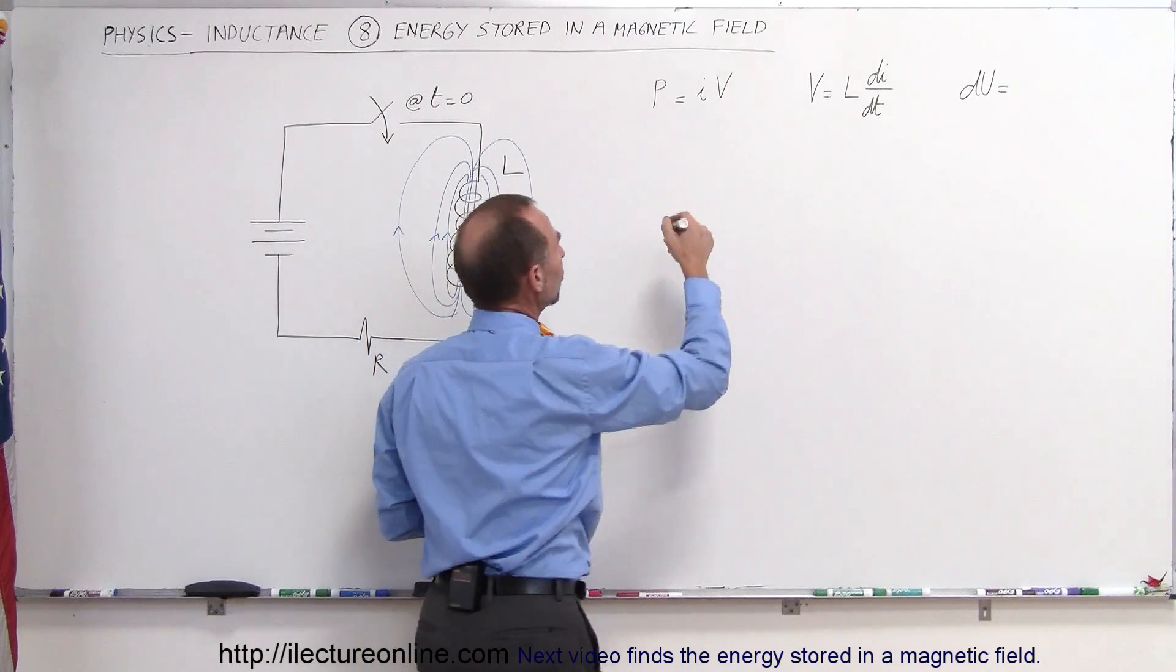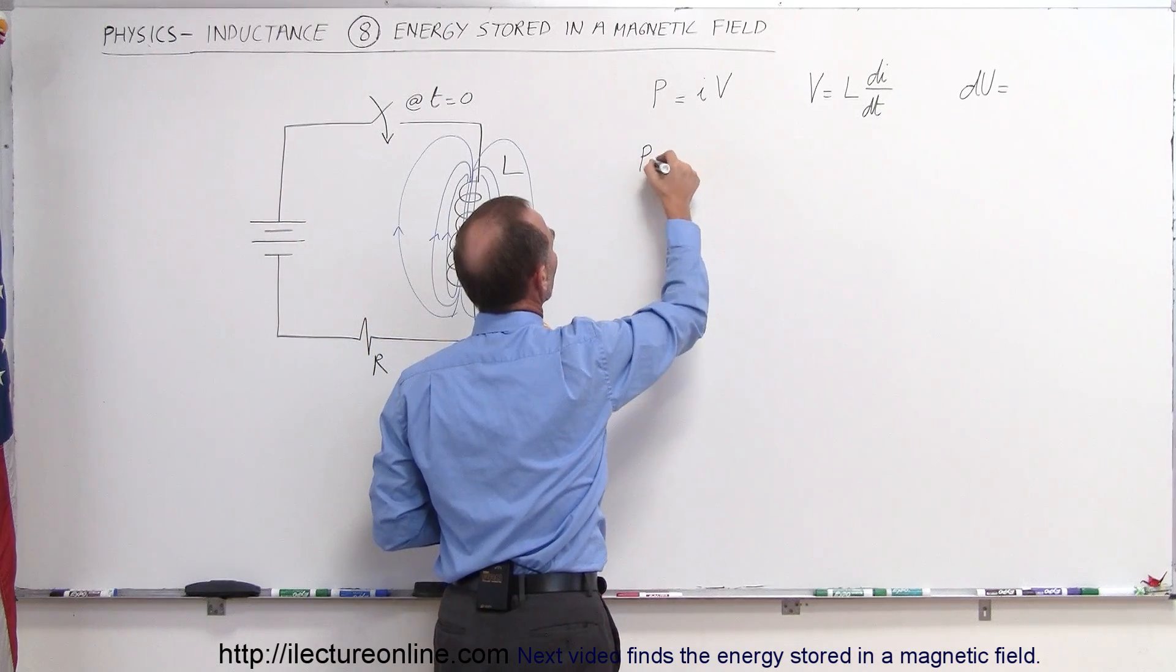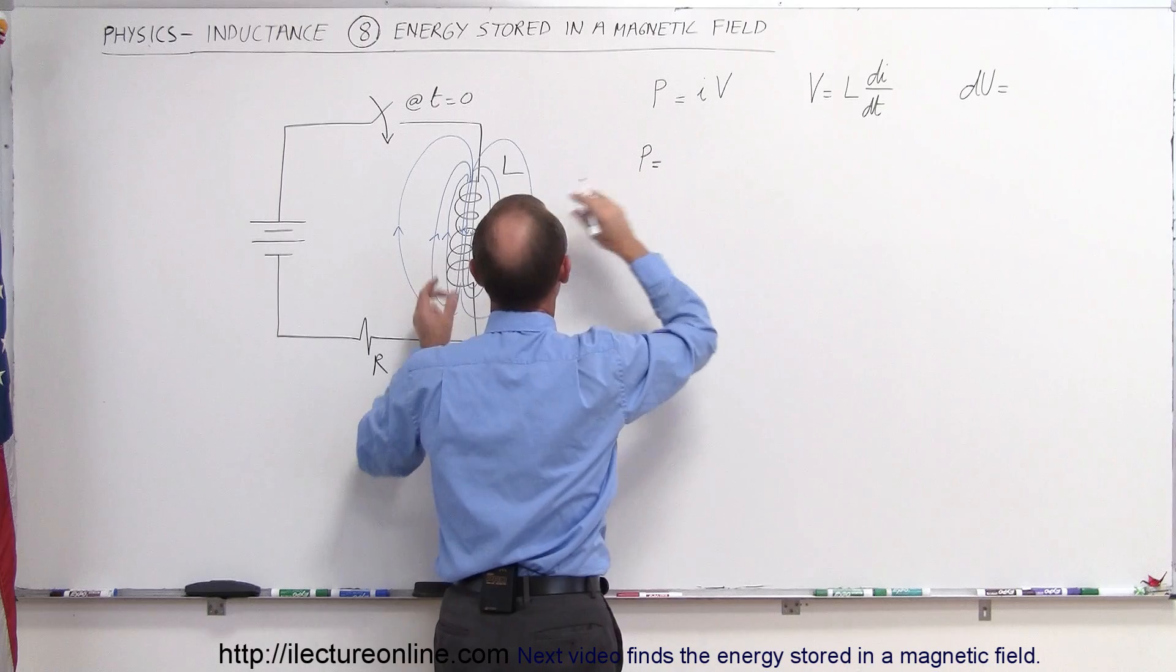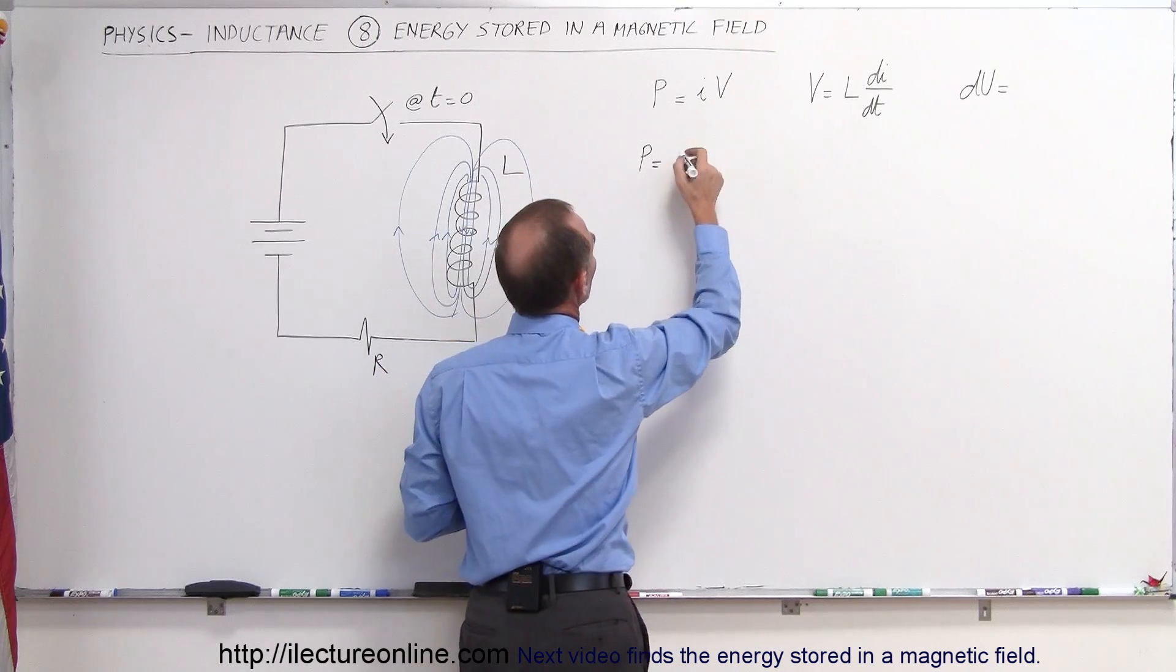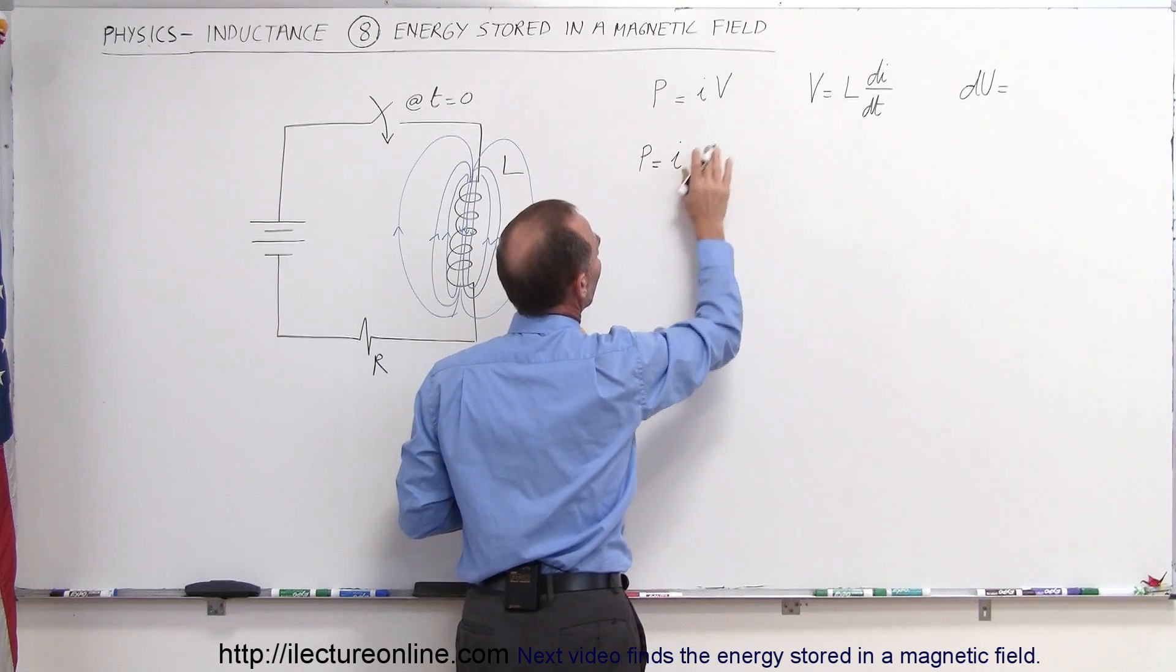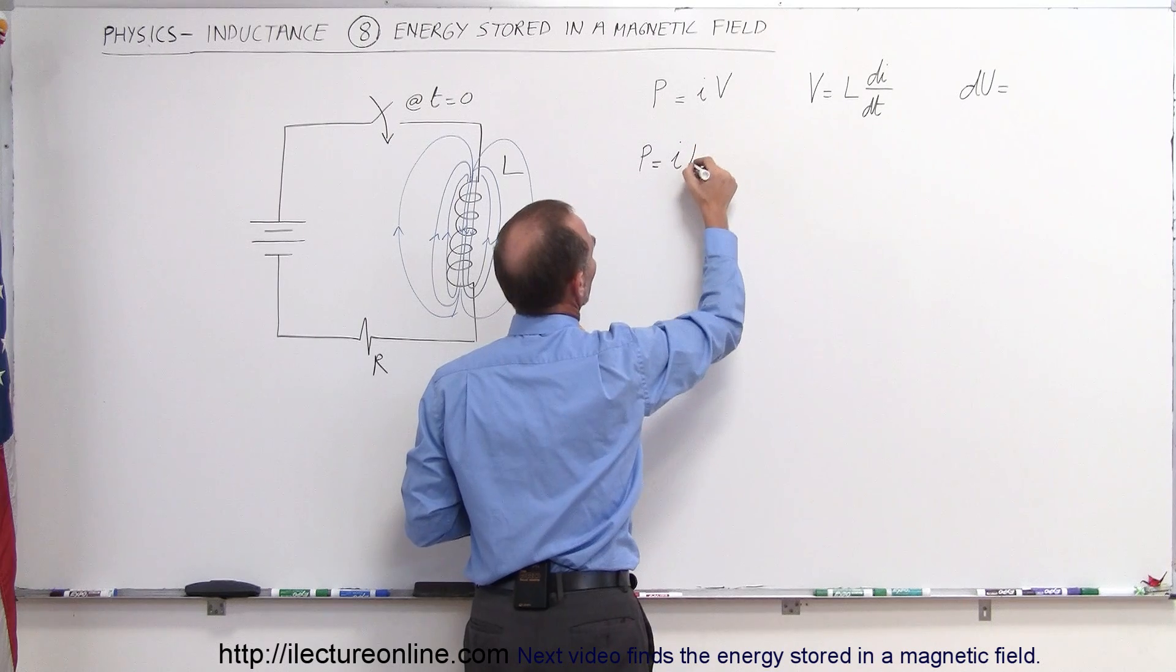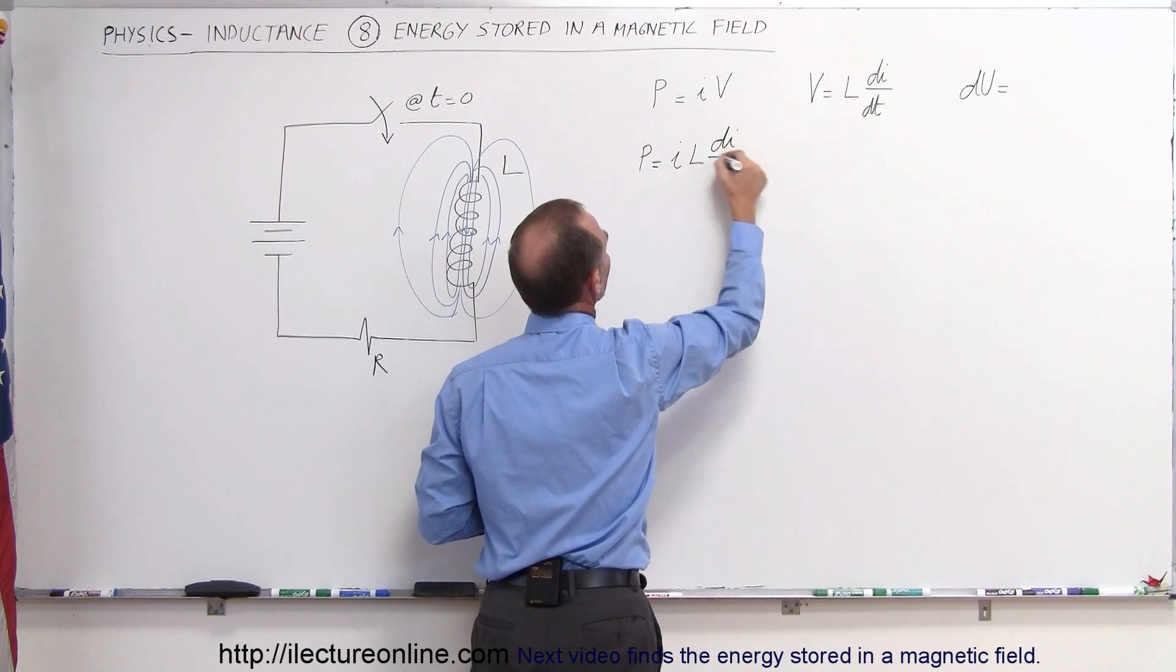So while the current is changing, the power given to the circuit, the power given to the coil, is going to be equal to I, the current, times the voltage across the current, which is L times dI dt.